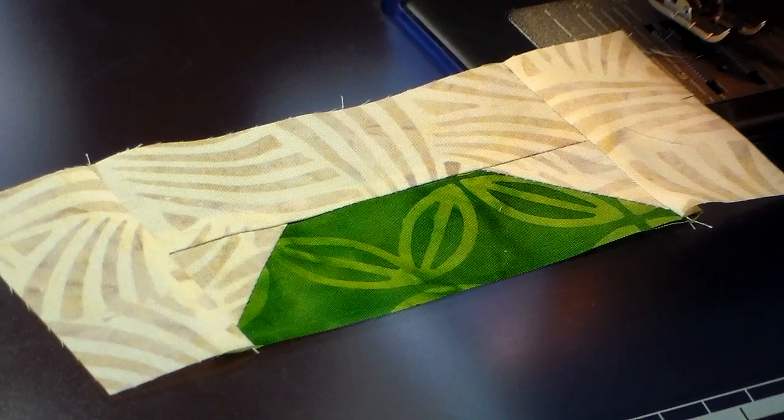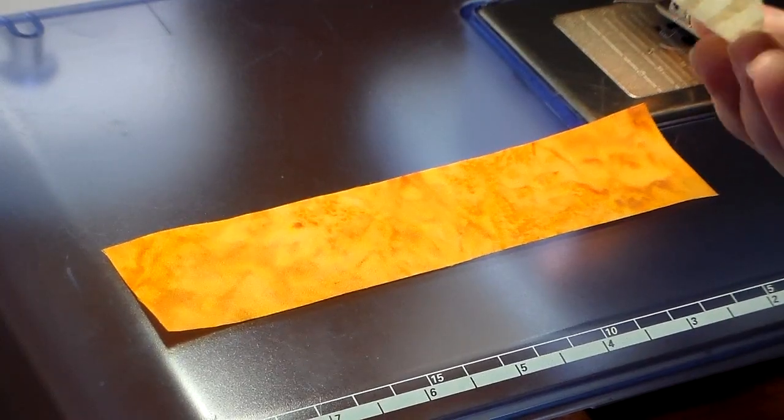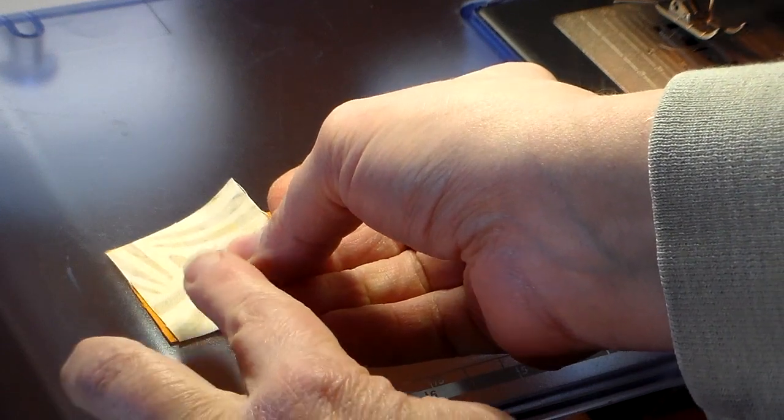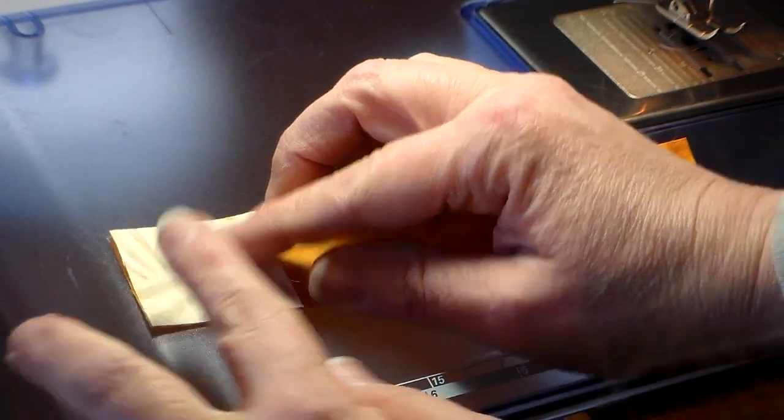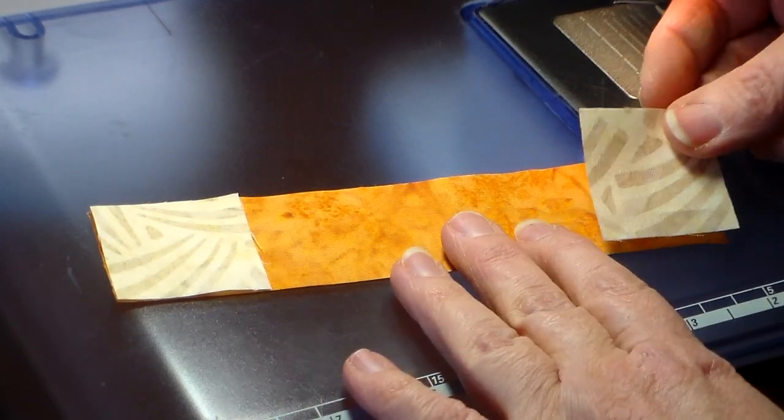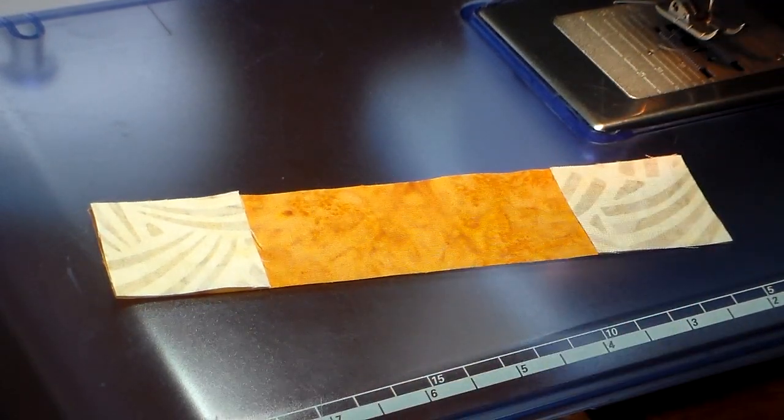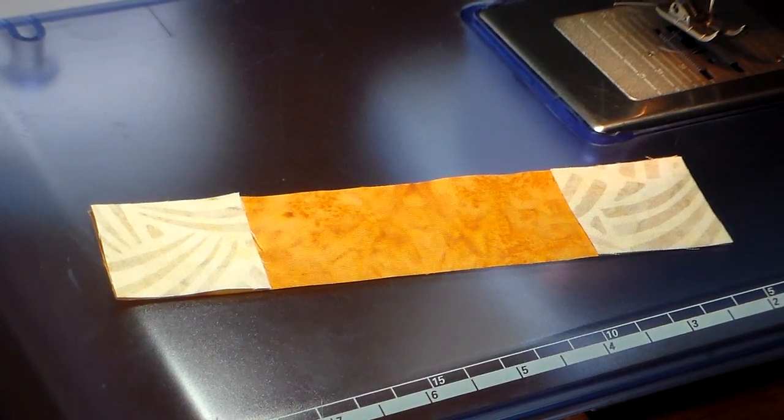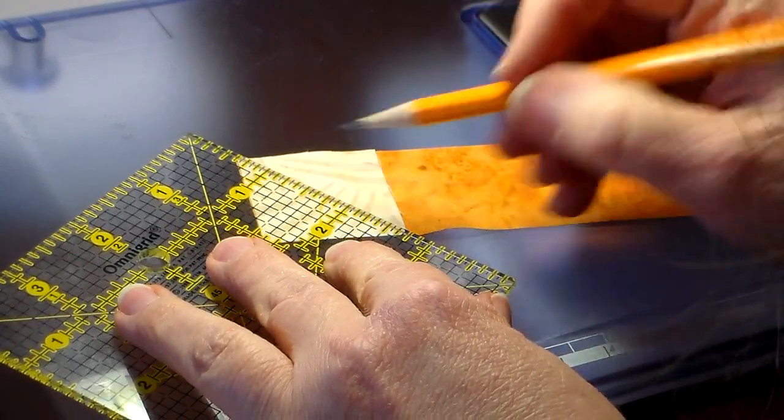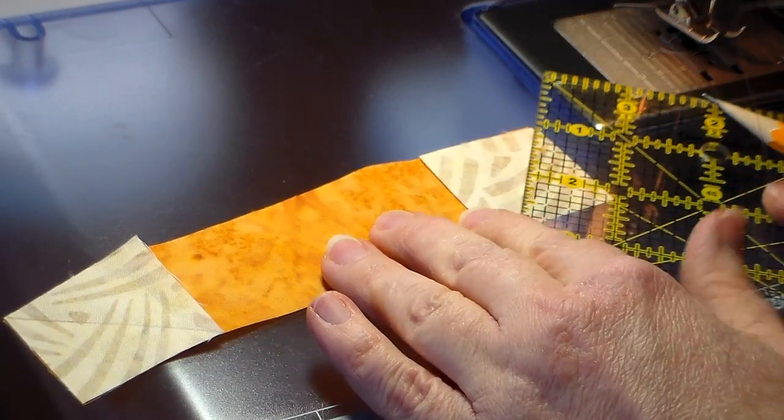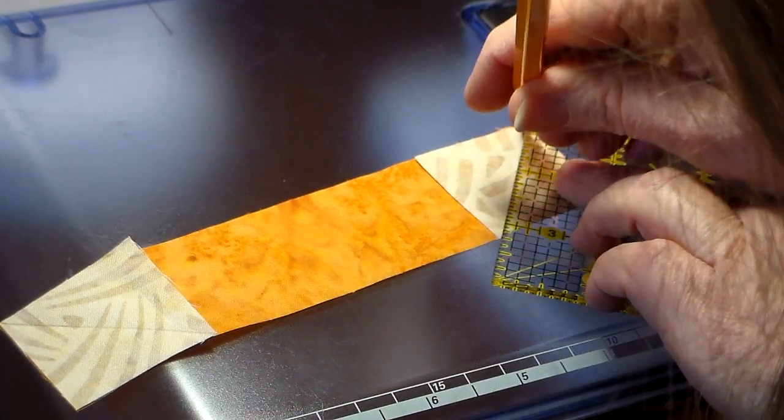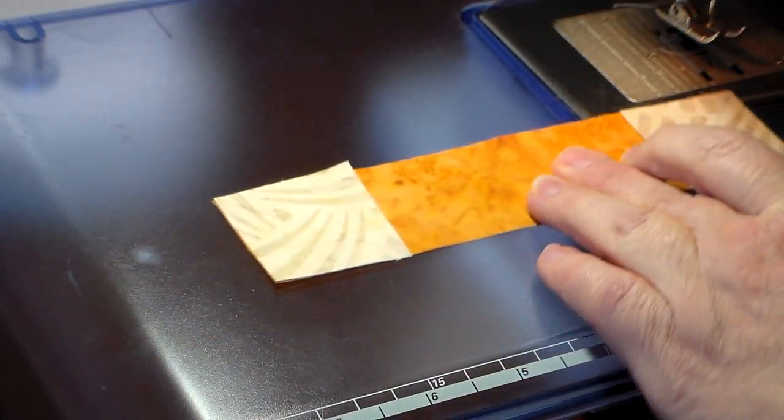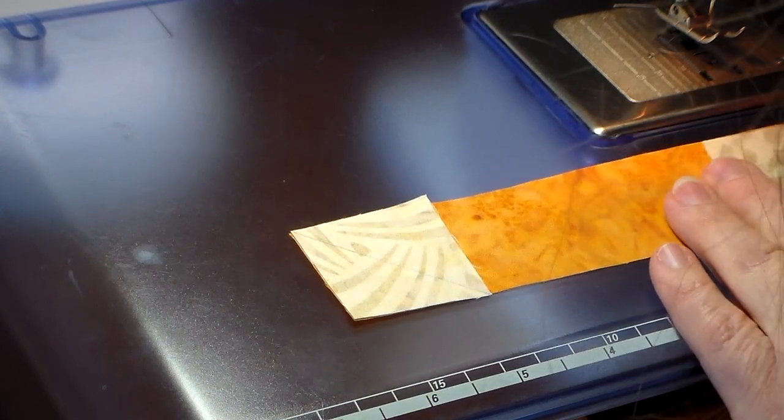And our pieces are just getting bigger. On the gold strip, you're going to put the two little squares of background on the diagonal lines and sew those on.